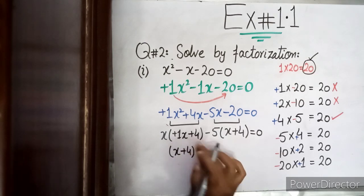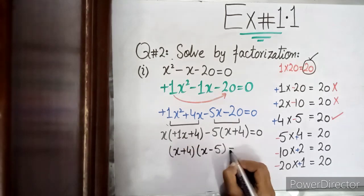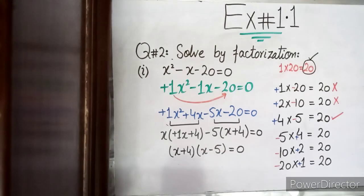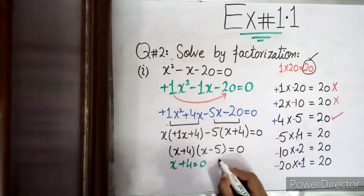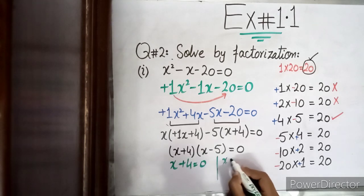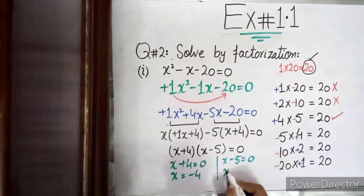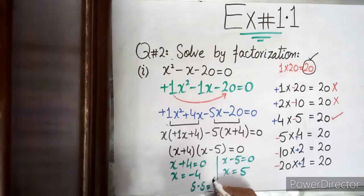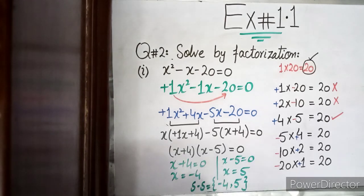Now the two brackets are the same: x plus 4. We take x plus 4 as common again. This gives us (x plus 4)(x minus 5) equals zero. Setting each factor to zero: x plus 4 = 0 gives x = minus 4, and x minus 5 = 0 gives x = plus 5. So the solution set is {minus 4, 5}.